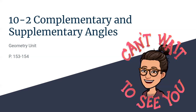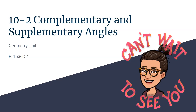The next two types of angles we're going to talk about are called complementary and supplementary angles. This goes along with pages 153 and 154 that you guys have. Just a couple of definitions to explain what complementary and supplementary mean, and then I'm going to get into a couple of examples of what you'll actually see on your homework and on the practice.